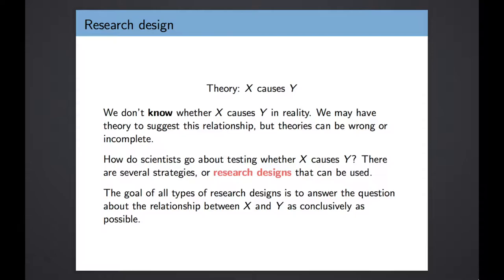When we are conducting research, we come armed with a theory about a particular independent variable x causing a dependent variable y. A theory can be wrong or misleading — we don't know for sure that x causes y in reality, and so we want to use data to test whether x causes y. There are lots of different strategies or research designs we can use, and what they have in common is their goal: to answer the question of whether there is a relationship between x and y as conclusively as possible.